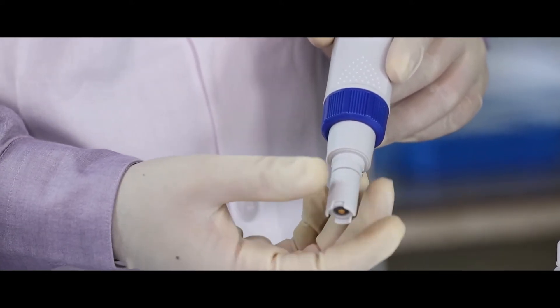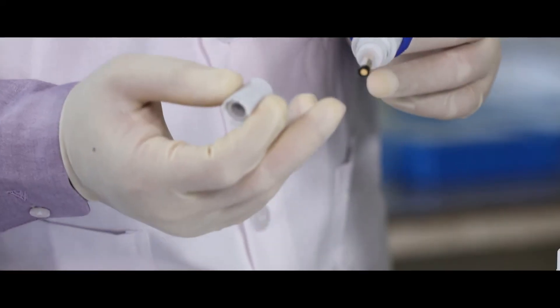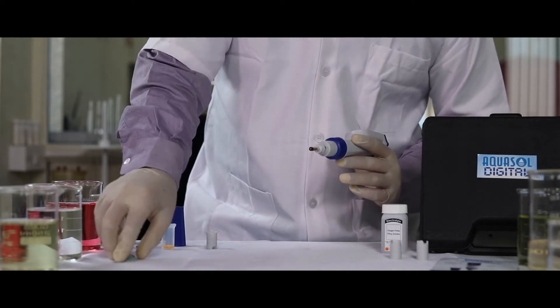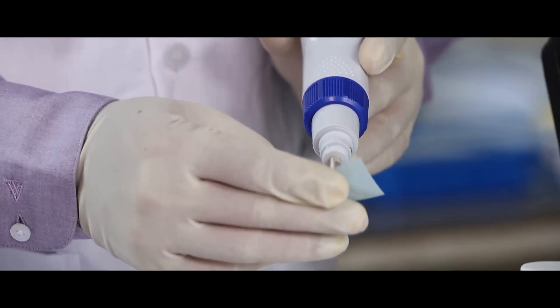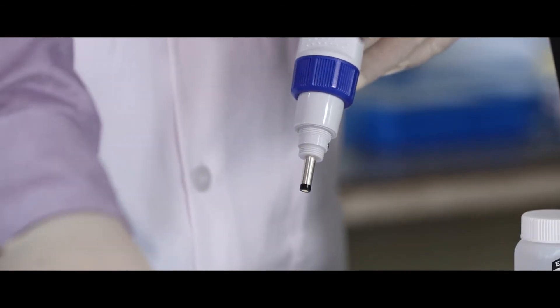Unscrew the membrane cap slowly to reveal the anode and the gold plated cathode. To polish the cathode, use the polishing strip moistened and polish it perpendicular to each other. Do not over polish it.